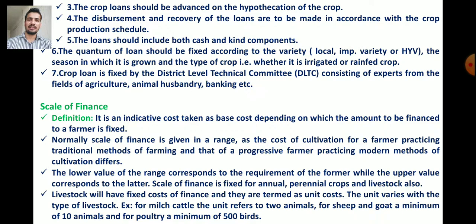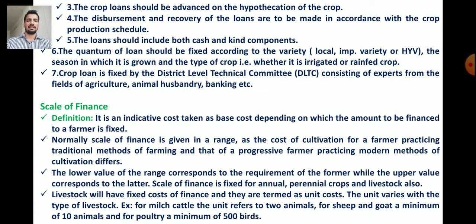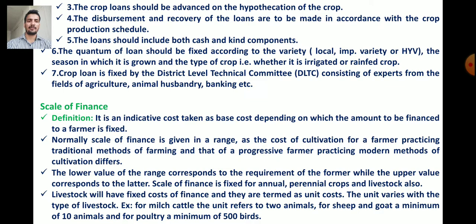Scale of finance is also fixed for annual crops, perennial crops, and livestock. For livestock, the scale of finance is termed as a unit cost because the unit varies with the type of livestock. For milch cattle, one unit corresponds to two animals; for sheep and goat, one unit corresponds to ten animals; and for poultry, one unit corresponds to five hundred birds.